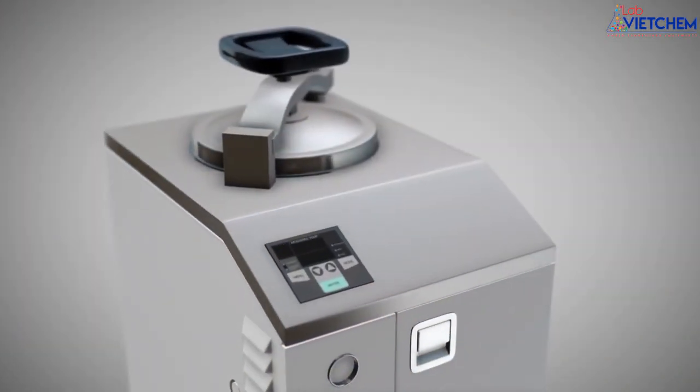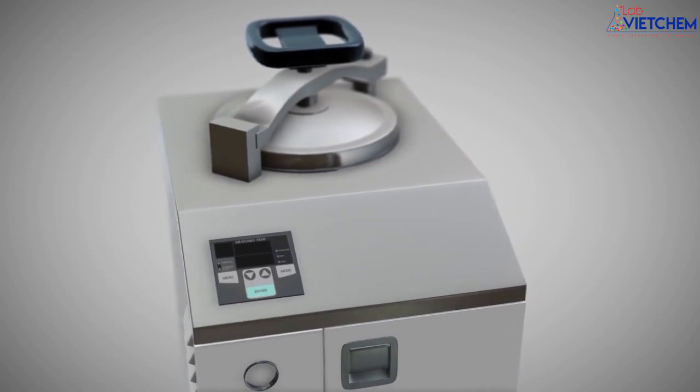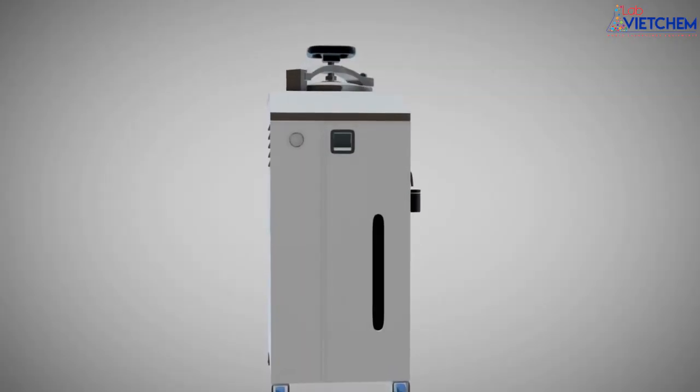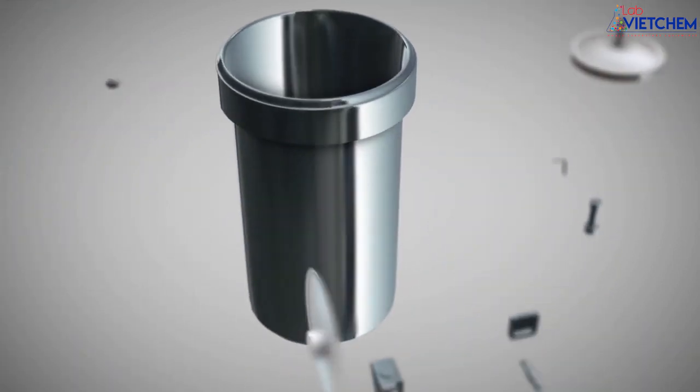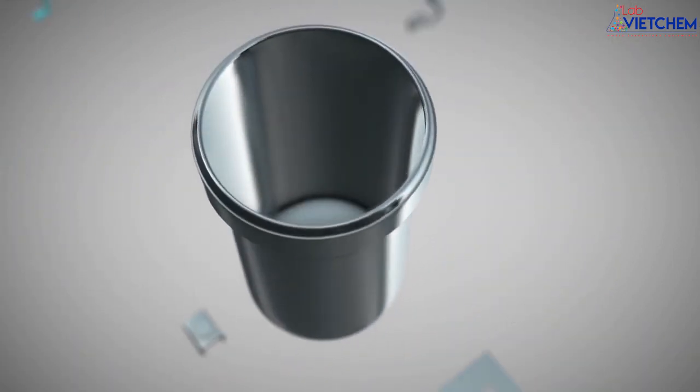So how do we sterilize materials in the lab? We use a device called an autoclave. Basically, an autoclave is a powerful pressure cooker that uses heat, steam, and pressure to destroy microorganisms.